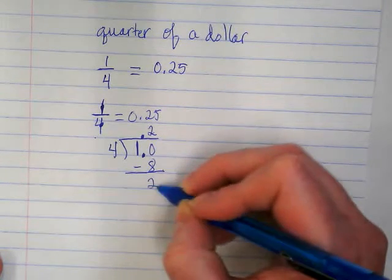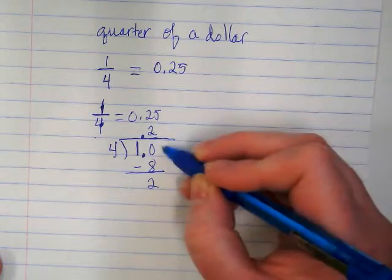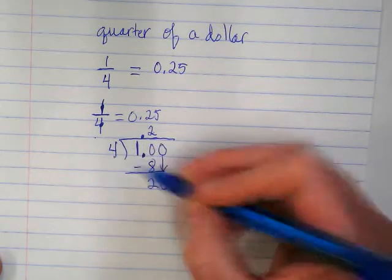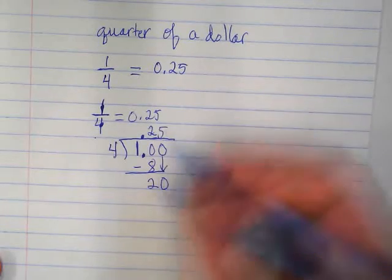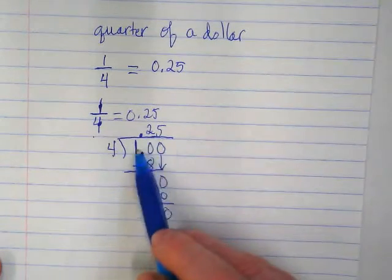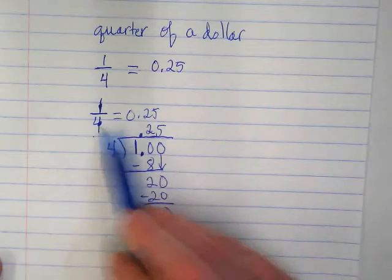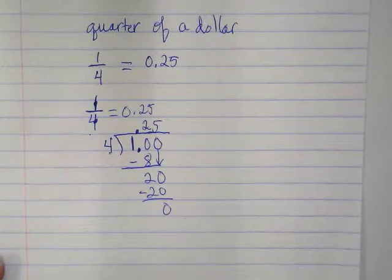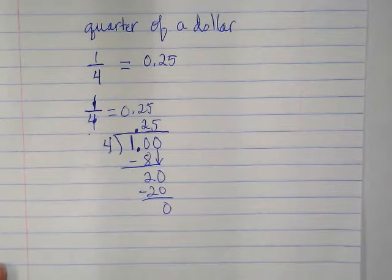I can add another zero and bring that down. Four can go into twenty five times. And again there's our same fact. One divided by four or one fourth is equal to twenty five hundredths or 0.25. That's how you turn a fraction into a decimal.